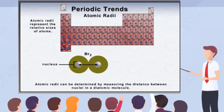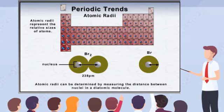Measuring the distance between two nuclei in a diatomic molecule and dividing this number by 2 gives a rough estimate of the radius of each atom. For instance, the distance between the nuclei in a diatomic bromine molecule is 238 picometers. This value, divided by 2, gives an atomic radius of 119 picometers for each bromine atom.